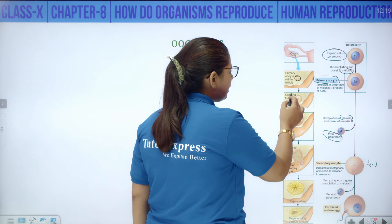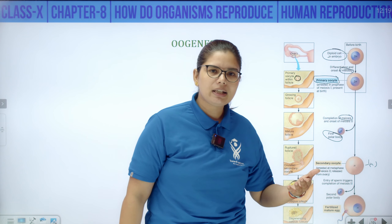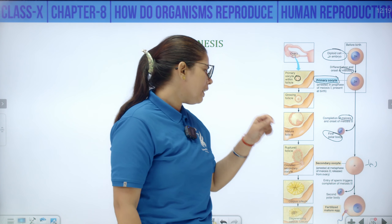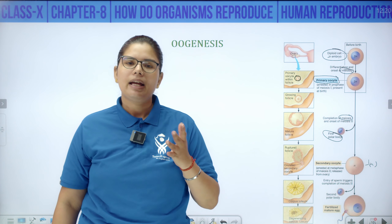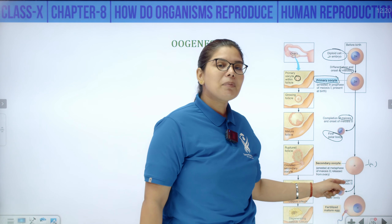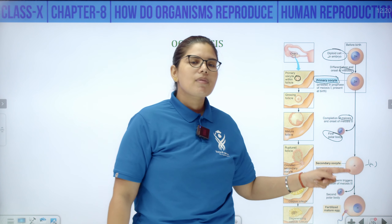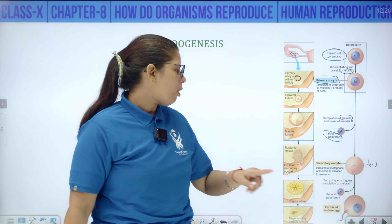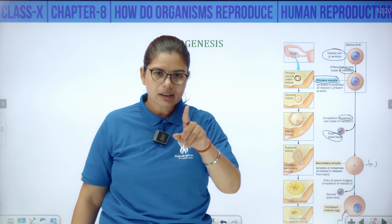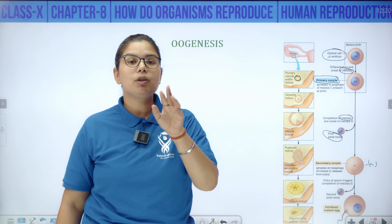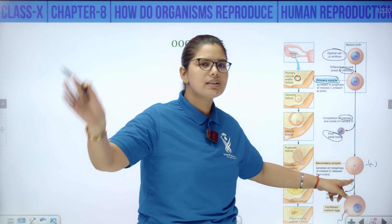The secondary oocyte then starts meiosis 2, but it also gets arrested — it is arrested until sperm entry occurs. When sperm enters, the secondary oocyte completes meiosis 2. Then it becomes the egg and a second polar body is formed. The first polar body forms when meiosis 1 is completed; the second polar body forms when meiosis 2 completes upon sperm entry. If no sperm comes, the secondary oocyte remains secondary oocyte and is discharged in the menstrual flow.